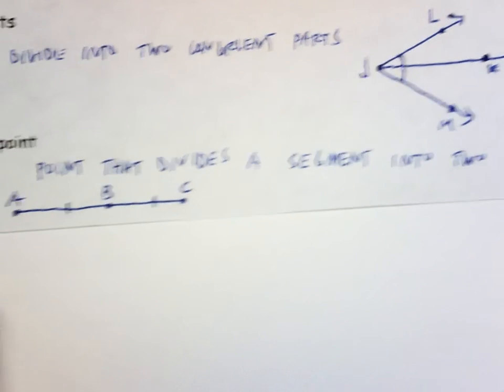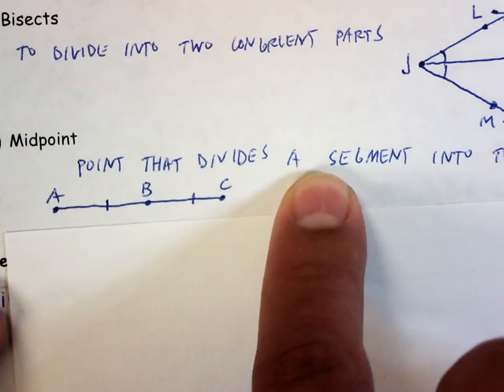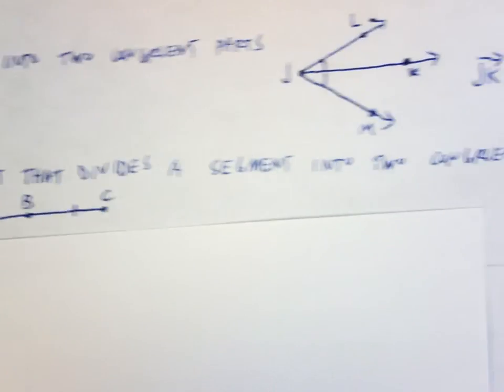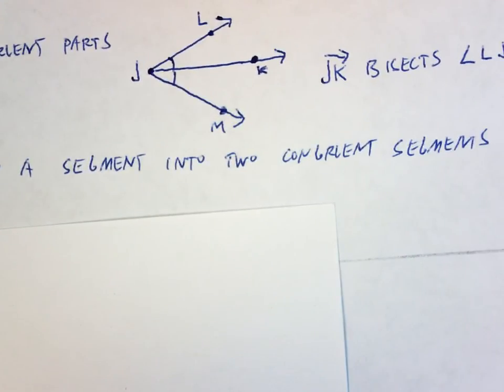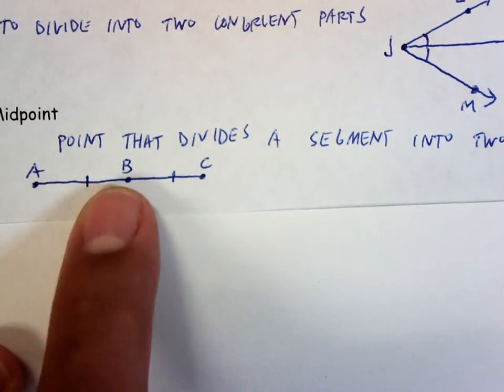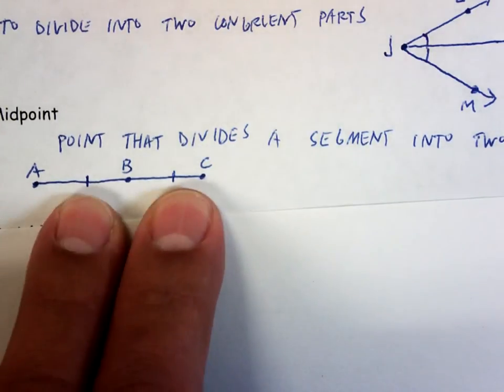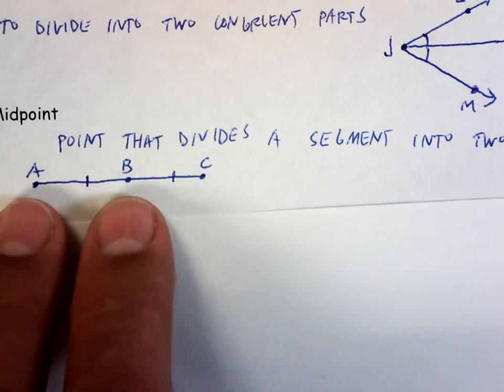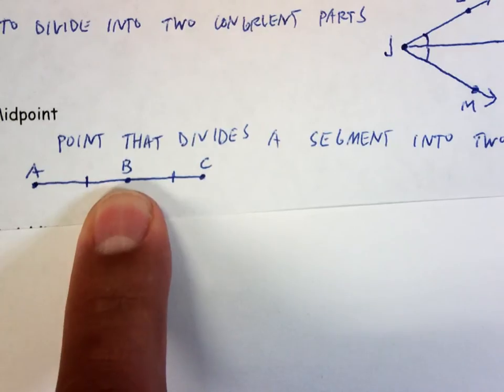Midpoint is the point that divides a segment into two congruent segments. And what does that look like? How do I know a midpoint? I've got segment AC, B is right there. Again, you can't ever say just because it looks like it's in the middle, it must be the middle. Because these two tick marks out here, I know AB must be congruent to BC. Therefore, B must be in the middle. B must be the midpoint.